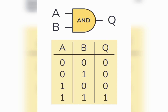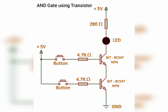Next is the AND logic gate. The AND logic gate is a type of digital logic circuit whose output goes high — logic level one — only when all its inputs are high. When both inputs are zero, the output is zero. When one of the inputs is zero, the output is zero. The only condition when the output goes high is when both inputs are one.